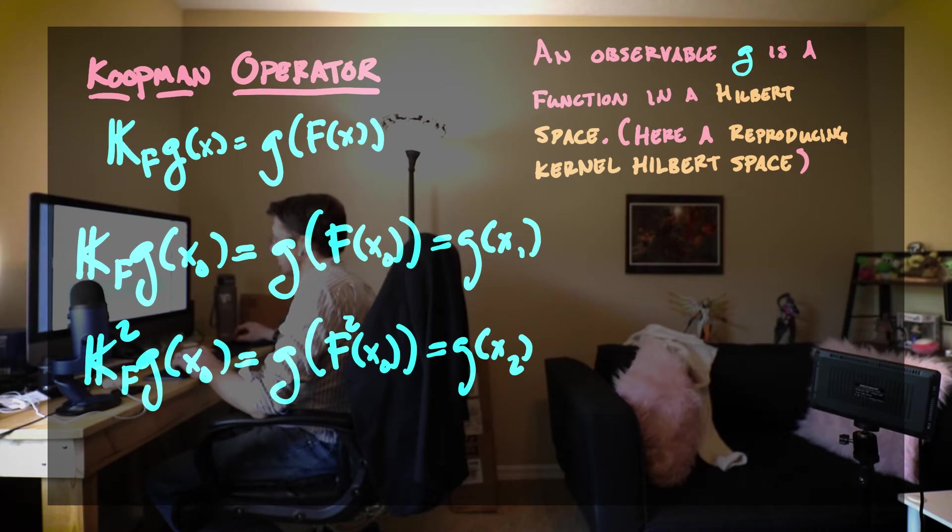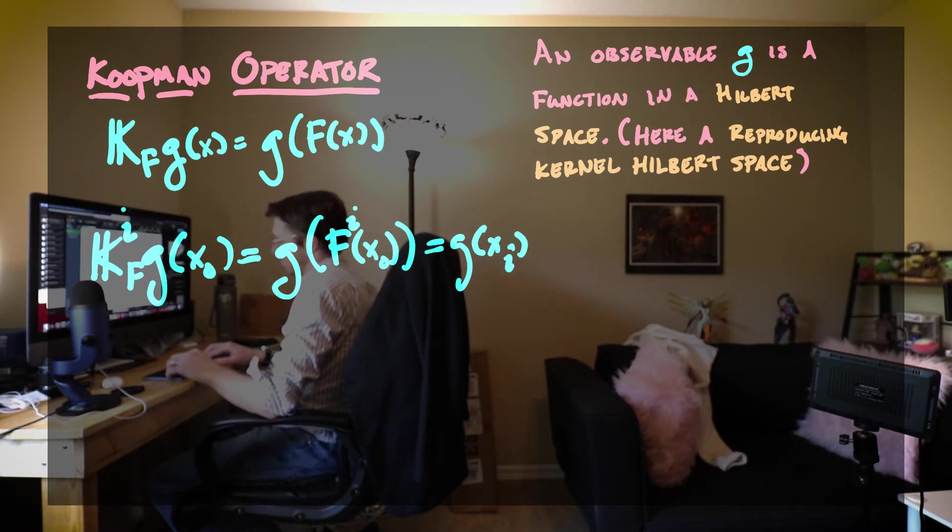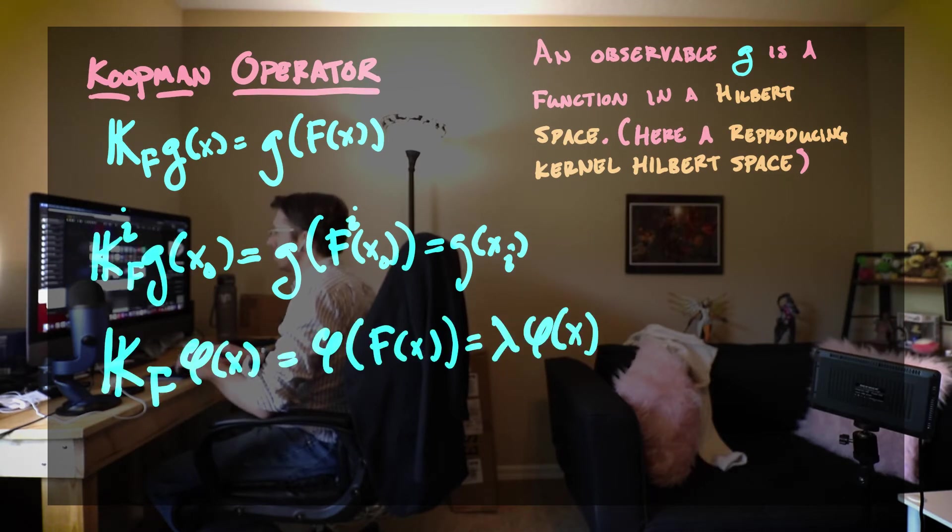And f composed with x0 is x1. And so then that just means that the Koopman operator applied to our observable evaluated at x0 is our observable at x1. And if you apply the Koopman operator twice and then evaluated at x0, then that's going to give you the observable evaluated at x2.